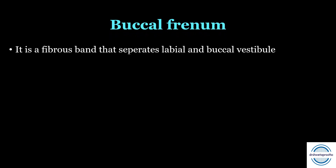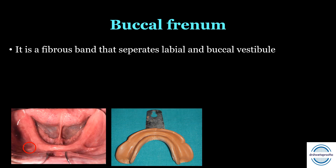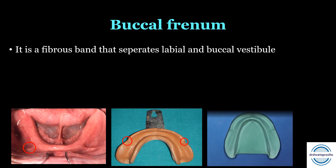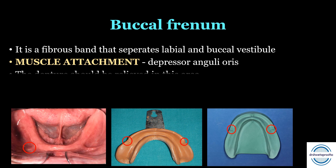Next is the buccal frenum — a fibrous band that separates the labial and buccal vestibule. It is recorded as the buccal notch in the impression, and we can locate the buccal frenum on the cast. The muscle attachment is the depressor anguli oris muscle, which mainly influences this area. The denture has to be relieved in this area, otherwise it will lift up with slight movement.